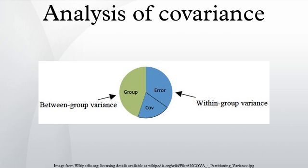Assumption 4 – linearity of regression: the regression relationship between the dependent variable and concomitant variables must be linear. Assumption 5 – independence of error terms: the error terms should be uncorrelated. The homogeneity of different treatment regression slopes is particularly important in evaluating the appropriateness of the ANCOVA model. Also note that we only need the error terms to be normally distributed; both the independent variable and the concomitant variables will not be normally distributed in most cases.